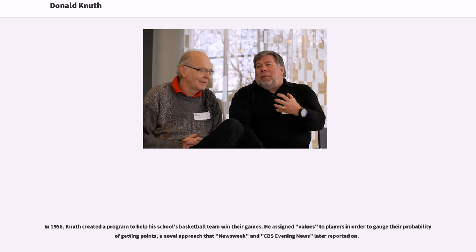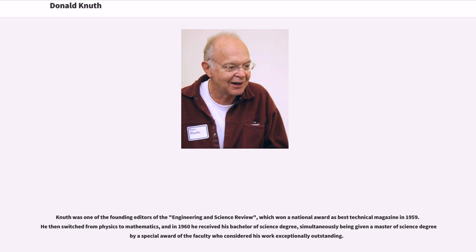In 1958, Knuth created a program to help his school's basketball team win their games. He assigned values to players in order to gauge their probability of getting points, a novel approach that Newsweek and CBS Evening News later reported on. Knuth was one of the founding editors of the Engineering and Science Review, which won a national award as Best Technical Magazine in 1959. He then switched from physics to mathematics, and in 1960 he received his Bachelor of Science degree, simultaneously being given a Master of Science degree by special award of the faculty who considered his work exceptionally outstanding.